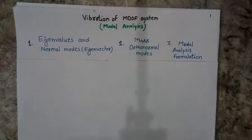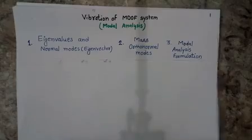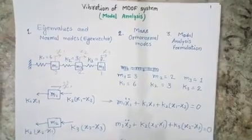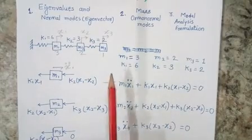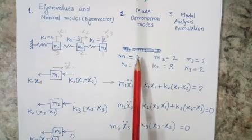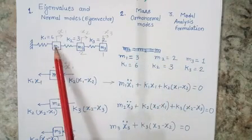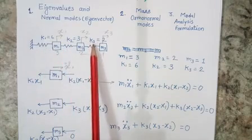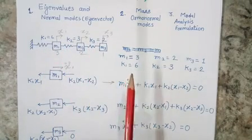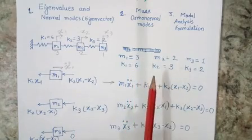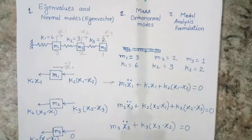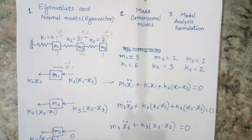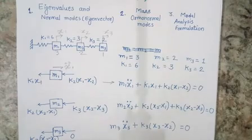I will start with a simple problem of three masses connected with three springs. For simplicity, I have considered the three masses as 3, 2, and 1, and the springs as 6, 3, and 2. Please understand that at this point I am not talking about any units of mass and spring, because the purpose of this session is to understand the philosophy of modal analysis — units would not affect the philosophy at all.